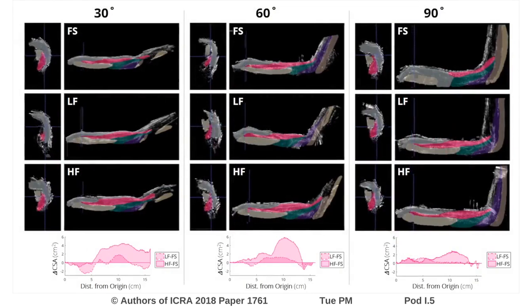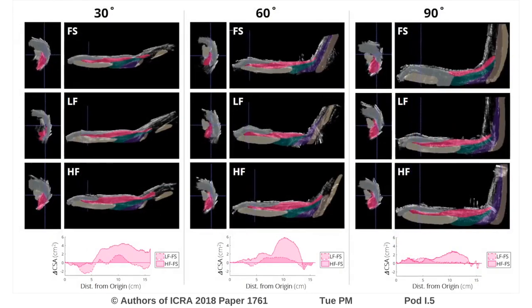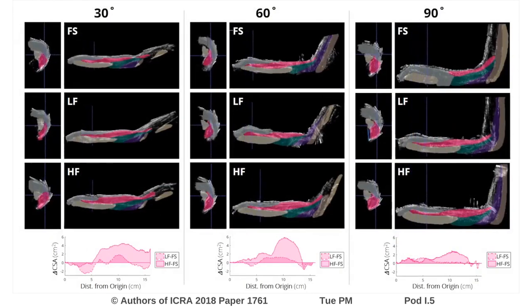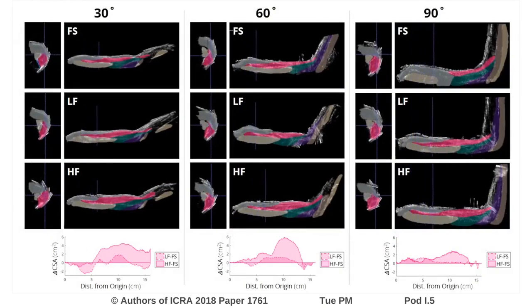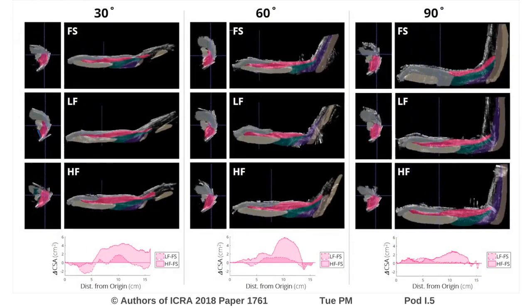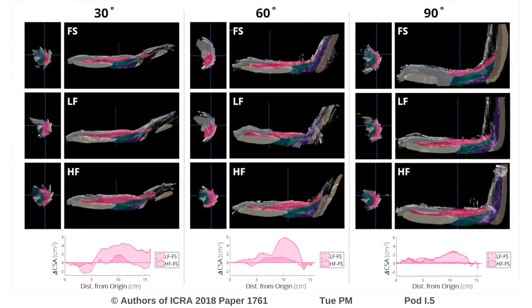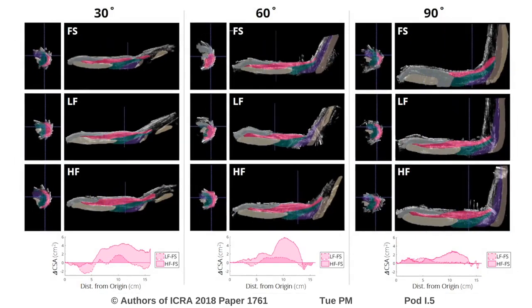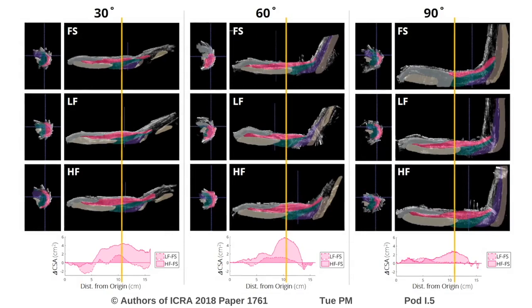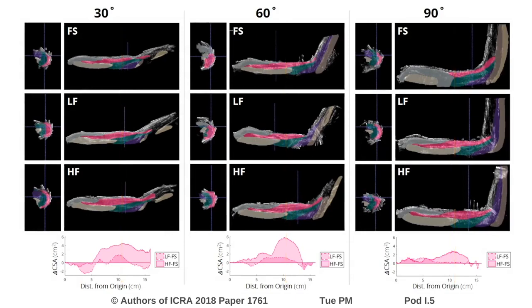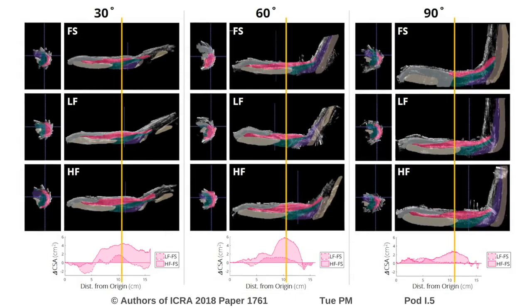Despite these variations, the spatial location of maximum deformation under loading, as measured by the maximum change in cross-sectional area, remains approximately consistent across elbow angles, suggesting an optimal location from which to extract a control signal.